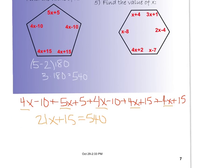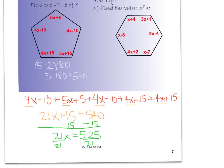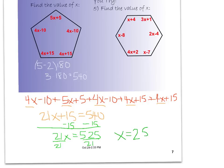Now I solve: subtract 15 from both sides — 21x equals 525. Divide both sides by 21. Using the calculator: 525 divided by 21 equals 25. So x equals 25. To recap: I used my formula to find the sum must be 540, summed all the expressions, combined like terms, and solved to get x equals 25.